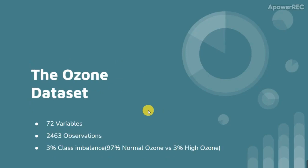This dataset is composed of 72 variables, 2,463 observations, and 3% class imbalance. This 3% represents the high level ozone class.